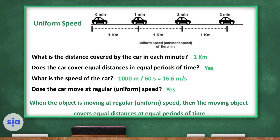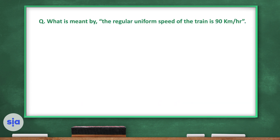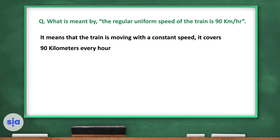When an object moves at regular uniform speed, it covers equal distances at equal periods of time. Here is a question: what is meant by the regular uniform speed of the train being 90 kilometers per hour? This means the train moves with a constant speed, covering 90 kilometers every single hour.